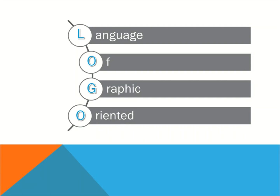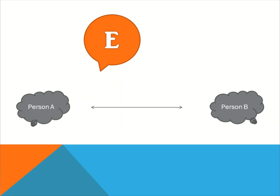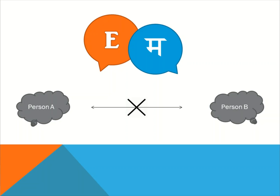When we say Logo is a graphic oriented computer language, there will surely be a question in your mind: what exactly is a computer language? Consider a scenario where person A is trying to communicate with person B, but person A can only speak English whereas person B only knows Marathi. Will there be a successful and effective communication between both of them? Of course not, because person A will not understand what B is saying and vice versa. A and B can effectively communicate only if they talk in a language understood by both of them.